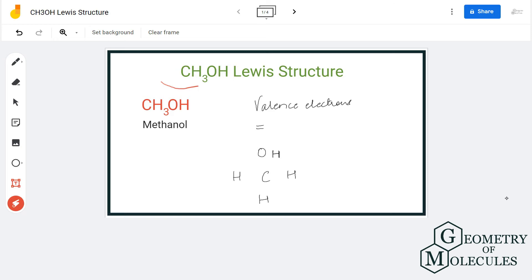Hi guys, in this video we are going to look at the Lewis structure of CH3OH. It is a chemical formula for methanol, and to draw the Lewis structure we'll first need to know the total number of valence electrons for this molecule.